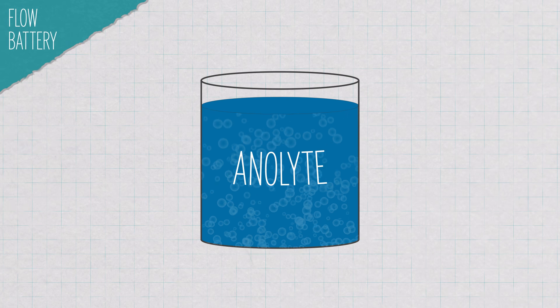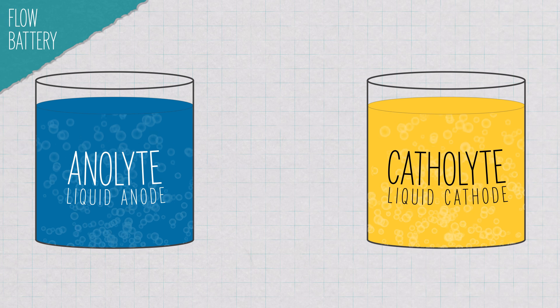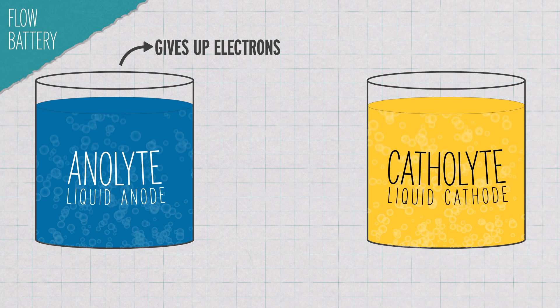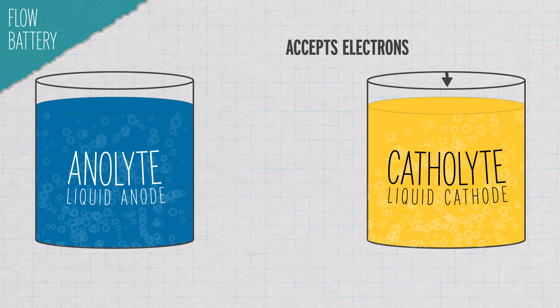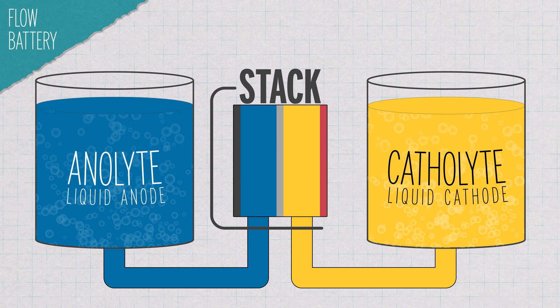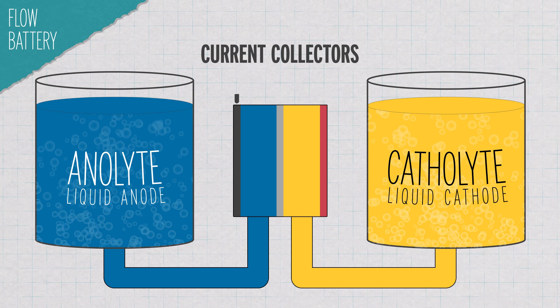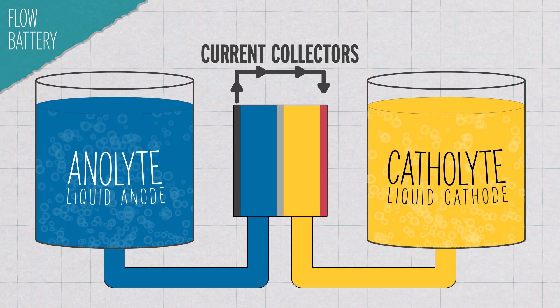Now a flow battery has a liquid anolyte, which you can think of as a liquid anode, and catholyte, which you can think of as a liquid cathode in these big tanks. The anolyte contains a dissolved metal that gives up electrons. The catholyte contains a dissolved metal that accepts electrons. The liquids are pumped through the stack, which is the part of the battery that does the charging and discharging. There's a membrane that lets protons through, and metal current collectors connected to wires that allow electrons to leave the anode, go through the device, and come back to the cathode.